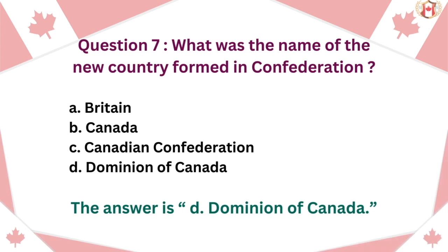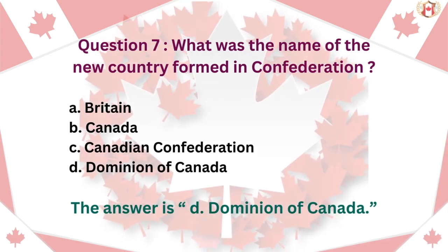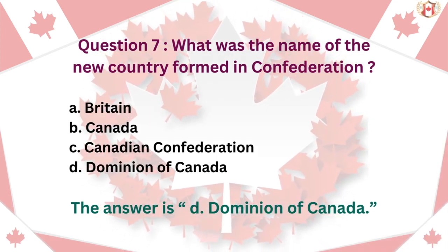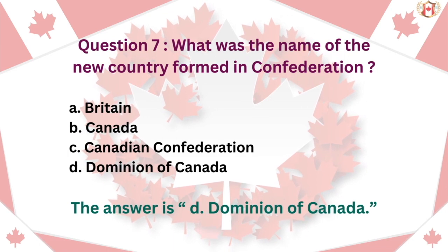Question 7: What was the name of the new country formed in Confederation? A. Britain, B. Canada, C. Canadian Confederation, D. Dominion of Canada. The answer is D. Dominion of Canada.